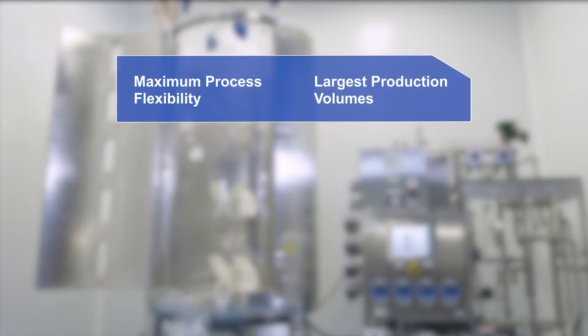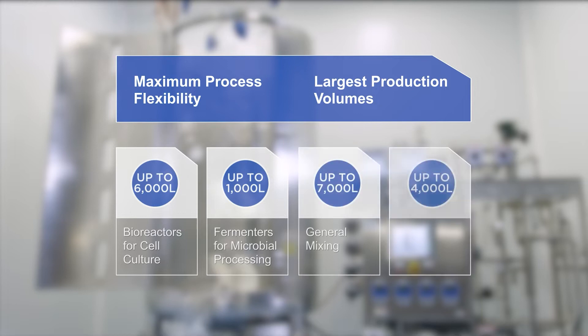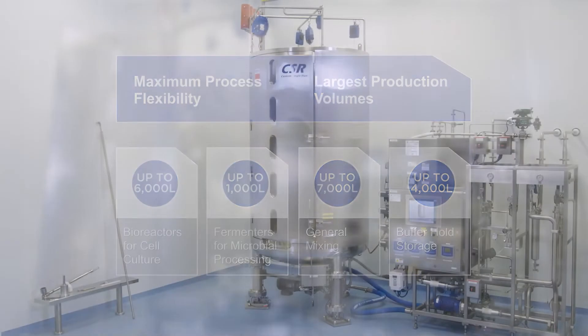ABEC advances the industry with single-use bioreactor volumes up to 6,000 liters, microbial fermentation solutions up to 1,000 liters, liquid mixing systems up to 7,000, and multiple buffer hold volumes each up to 4,000 liters, delivering significantly more product per unit area of floor space.